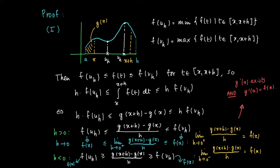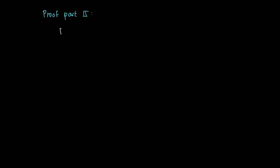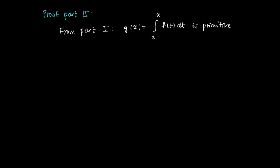Since both the right-hand limit and the left-hand limit exist and equal f(x), the full limit as h goes to 0 exists, meaning the derivative of g at x exists and equals f(x). This is exactly the first part we needed to show for the Fundamental Theorem of Calculus. For the second part, we may use the technique from part 1: if f is continuous on [a, b], then we can construct a primitive g(x) = integral from a to x of f(t) dt.